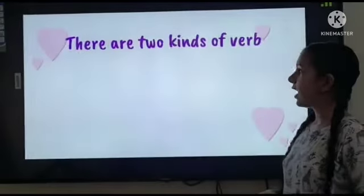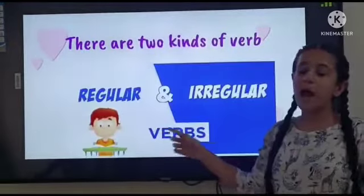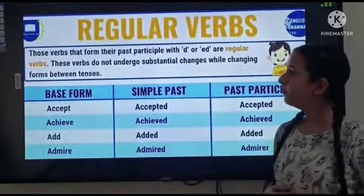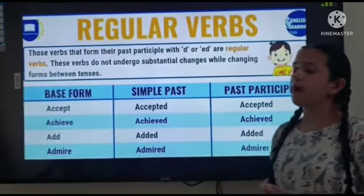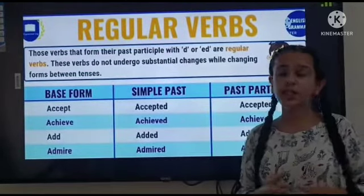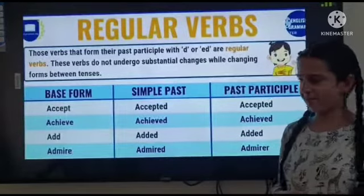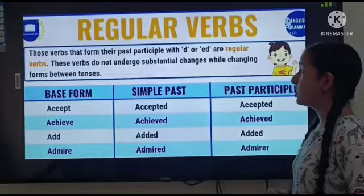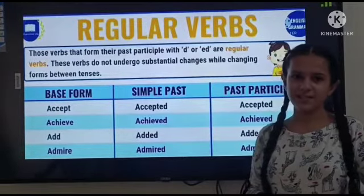There are two kinds of verbs: regular verbs and irregular verbs. Those verbs that form their past participle with -d or -ed are regular verbs. These verbs do not undergo substantial changes while changing forms between tenses.